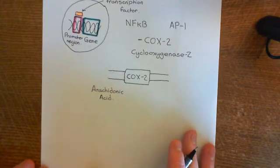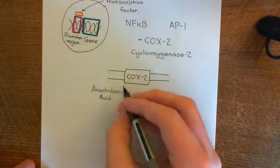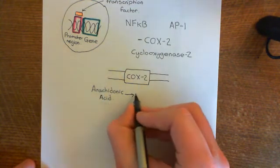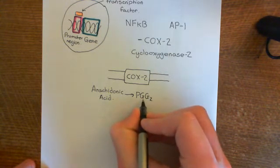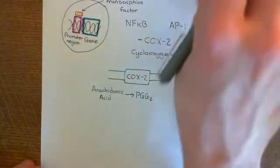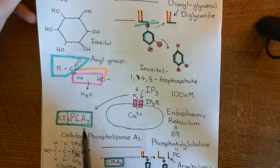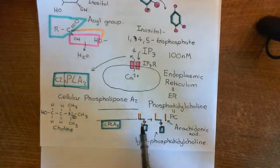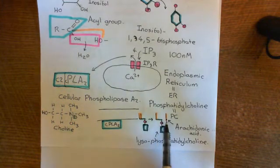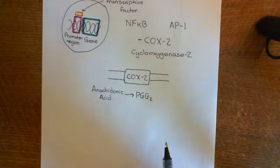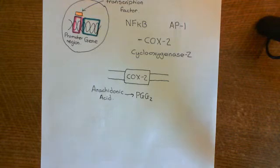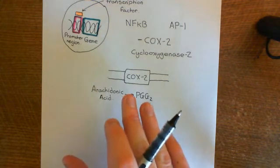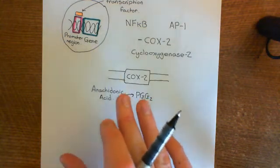For cyclooxygenase-2 to do anything, you need the arachidonic acid substrate. Arachidonic acid is produced by activation of cellular phospholipase A2 by increased calcium in the cytoplasm — which broke down phosphatidylcholine into lyso-phosphatidylcholine and arachidonic acid. You do not usually have arachidonic acid in the cell membrane, so this enzyme only has an effect if the endothelial cells have already undergone type 1 activation.